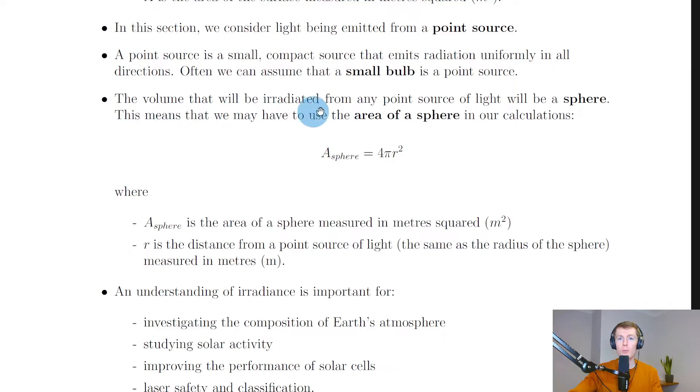The volume that will be irradiated from any point source of light will be a sphere. This means that we may have to use the area of a sphere in our calculations, and remember you get this on the relationship sheet in your exam. The area of a sphere is equal to four pi r squared, where A_sphere is the area of the sphere measured in meters squared, and r is the distance from a point source of light, which is the same as the radius of the sphere measured in meters.